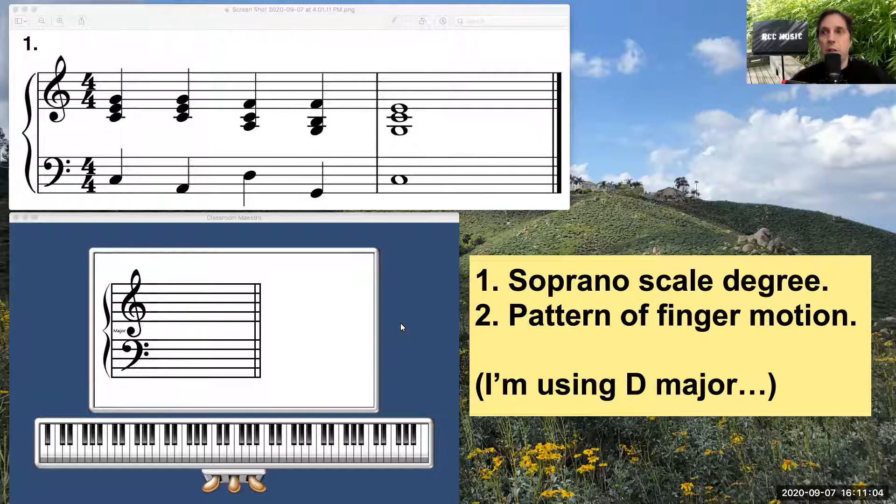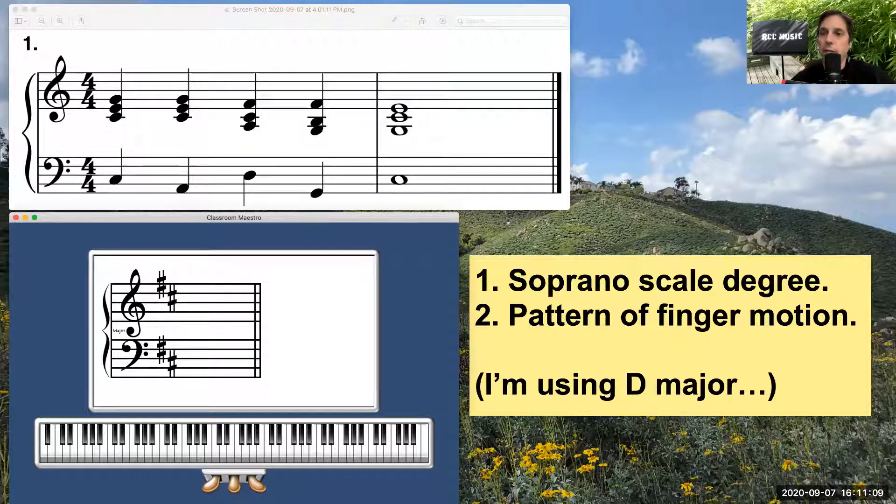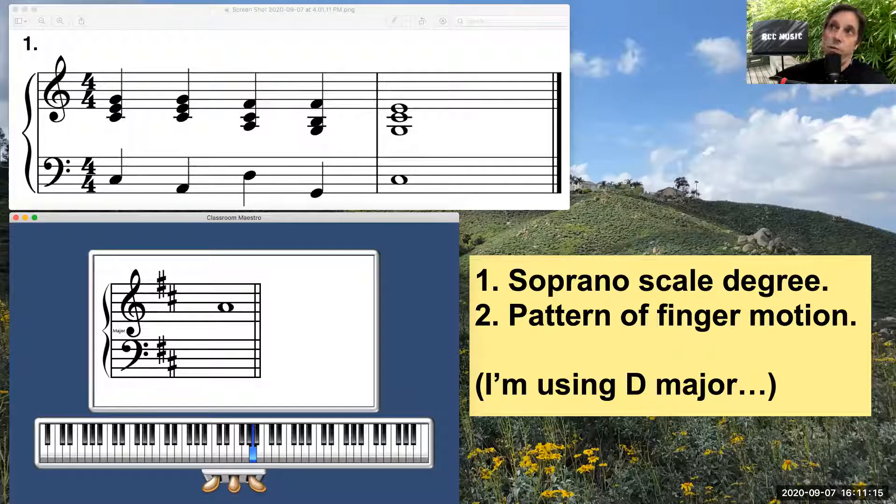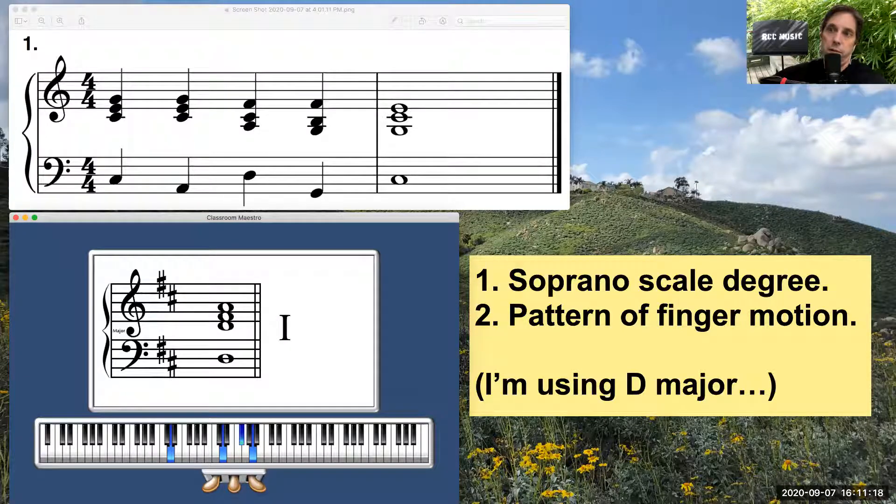So I'm going to change my key signature now to D major and I'll play my first chord. I know that the fifth scale degree should be in the soprano and I'm ready to go.